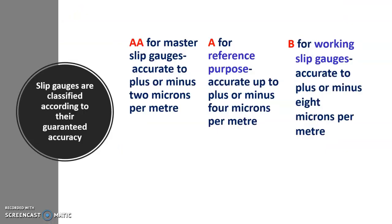On accuracy of slip gauges, slip gauges are classified according to their guaranteed accuracy. There are some grades: AA grade, A grade, and B grade.